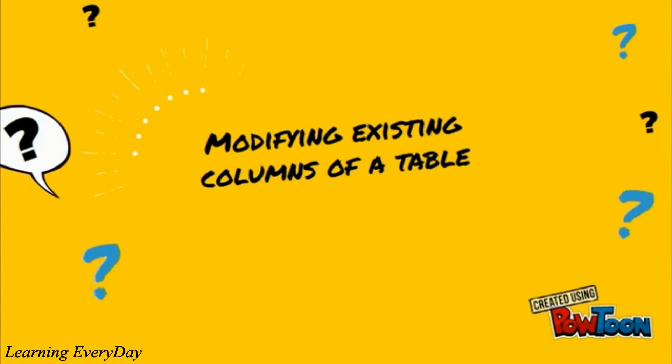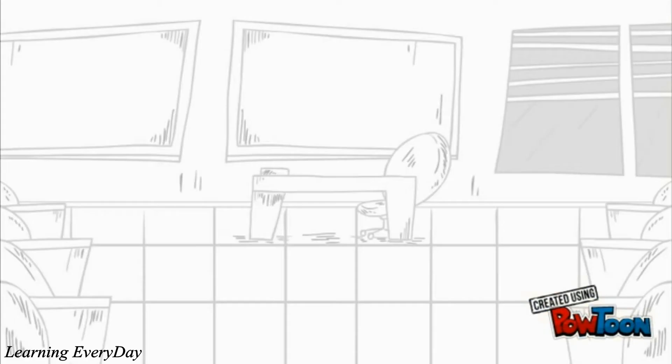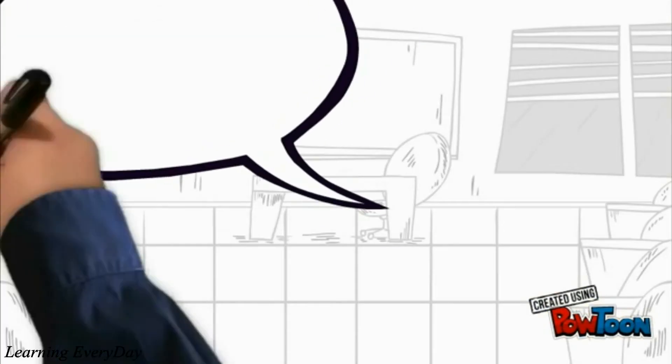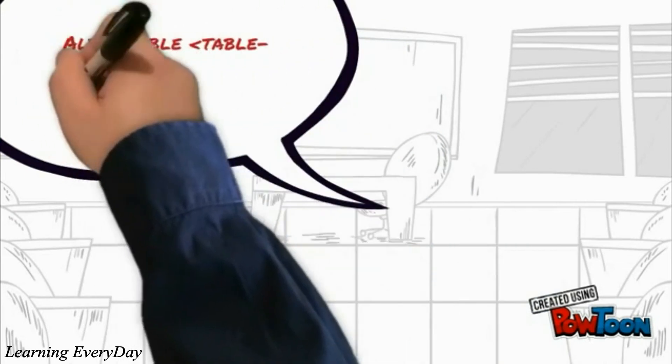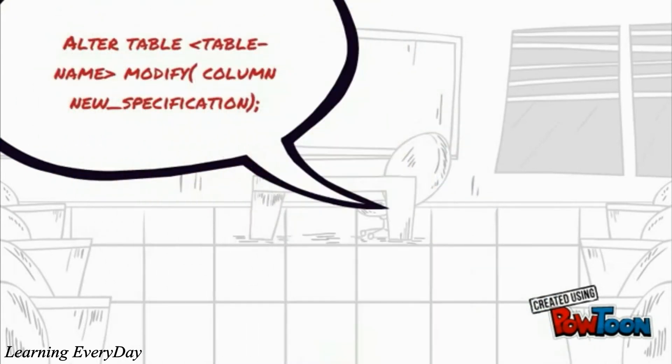The general syntax for alter table command with modify option is on the screen. Here in the syntax you have to provide name of the table and name of the column along with new specifications. You can change the data types of columns as well as you can change width of the columns. Always try to use this option in case of table having no records. Otherwise data can be lost or truncated.